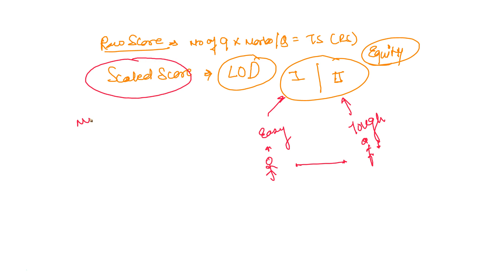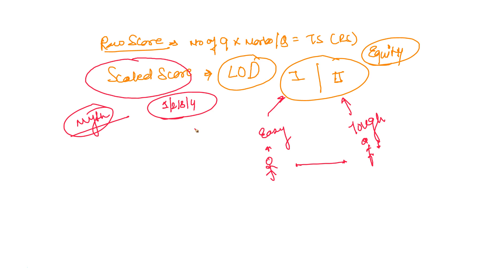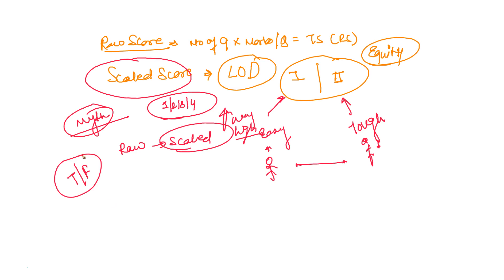Now let me tell you the myth about scaled score. The entire scaled score mechanism runs on level of difficulty. Earlier, CAT had four slots and the level of difficulty varied quite a bit between them, so the difference between raw score and scaled score was huge — this happened back in 2011, 2013, 2014. The myth is that your scaled score is way, way higher than your raw score. This can be true, but it can be false also. Your scaled score is much higher than your raw score only when there are more slots with bigger variations in difficulty level.